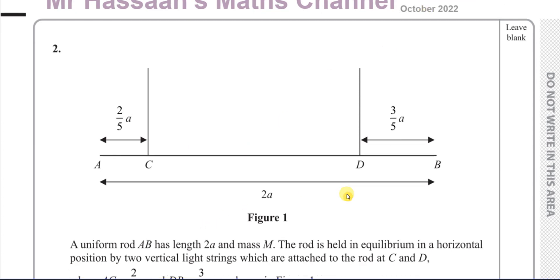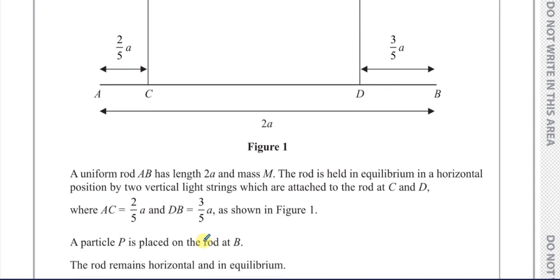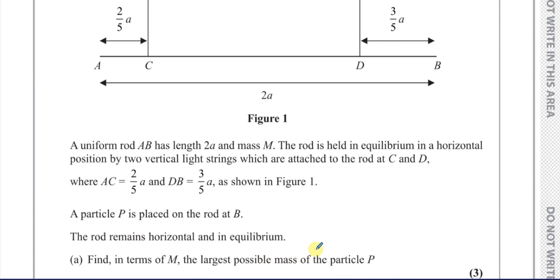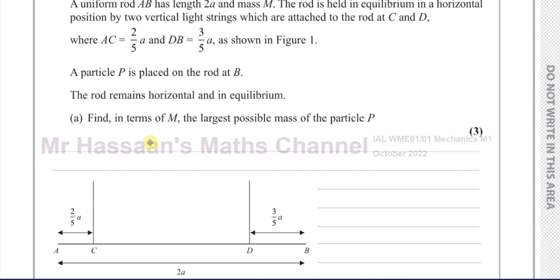Here it tells us about a uniform rod AB, which has a length of 2A and a mass M. The rod is held in equilibrium in a horizontal position by two vertical light strings attached to the rod at C and D, where AC is two-fifths A and BD is three-fifths A, as shown in figure 1. A particle P is placed on the rod at B, and the rod remains horizontal and in equilibrium.